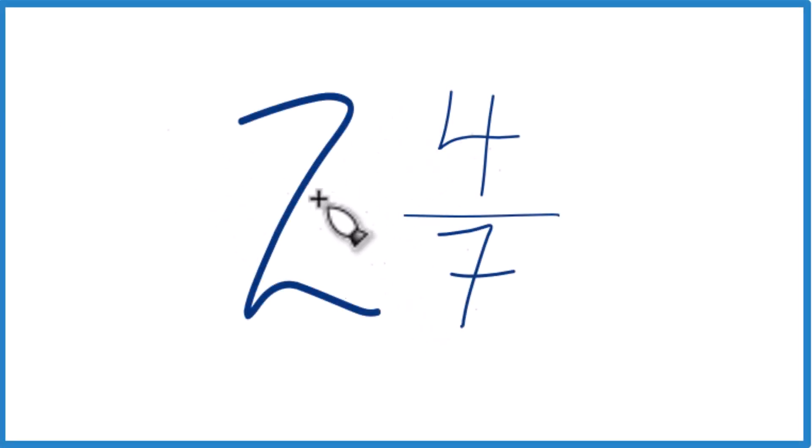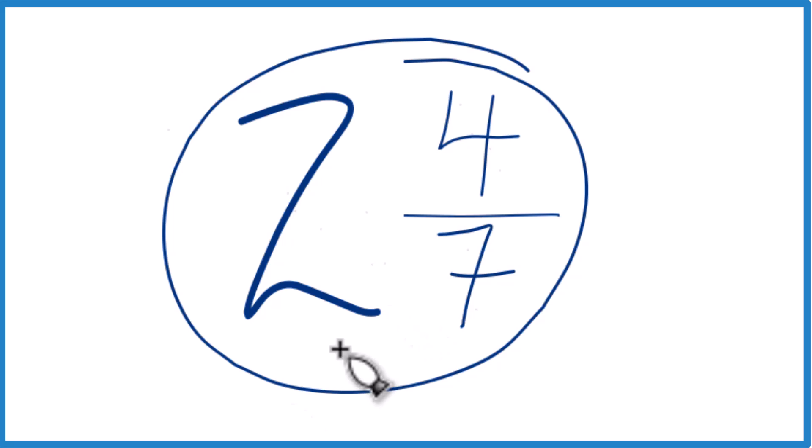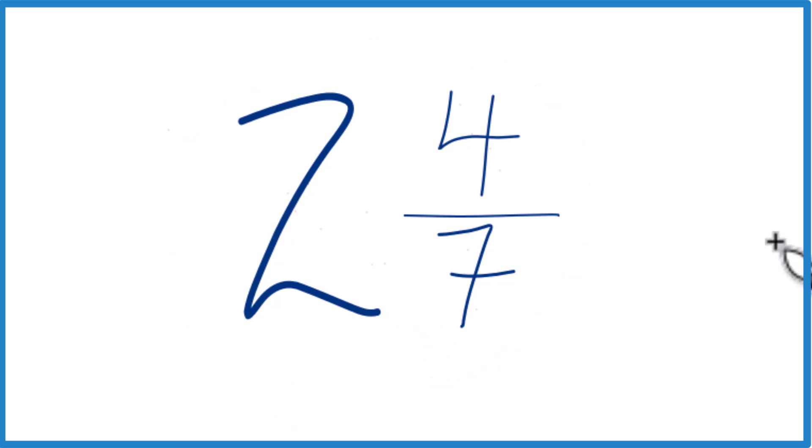All right, let's take the mixed number 2 and 4 sevenths and change that to an improper fraction. Here's how you do it.